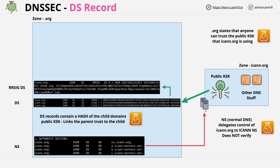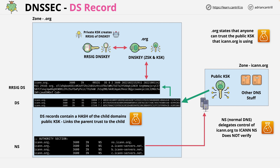Now we just need to add the records which store the .org zone's public keys. This means a DNS key record set containing the .org public zone signing and key signing keys. These are used to validate RR-SIGs in this zone, and this DNS key RR-SET needs a matching RR-SIG, which is created by signing the DNS key RR-SET with the zone's key signing key.